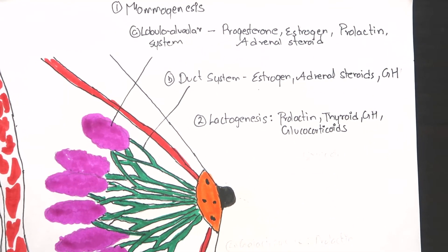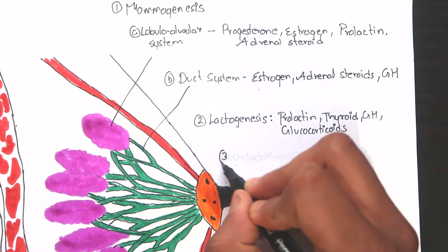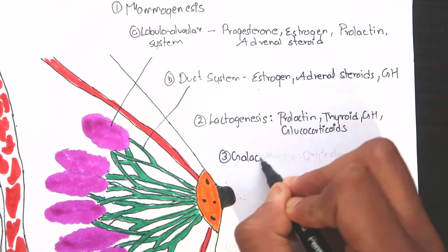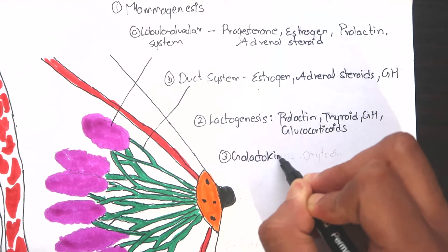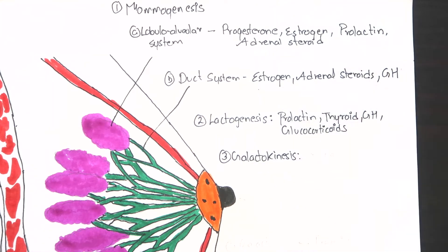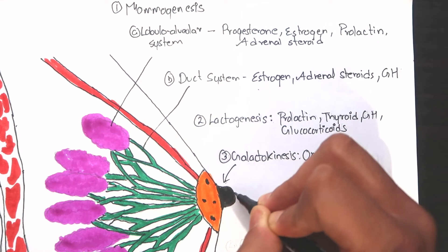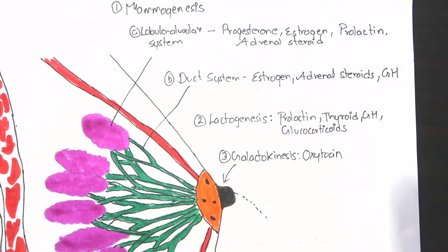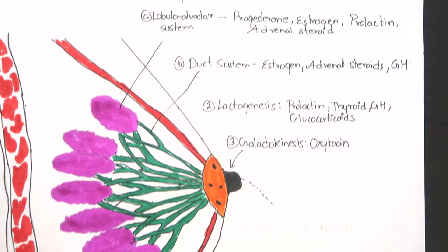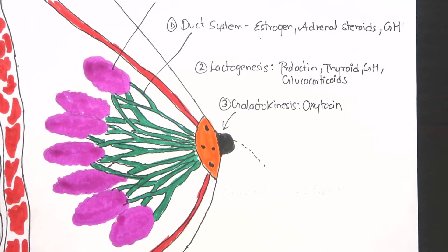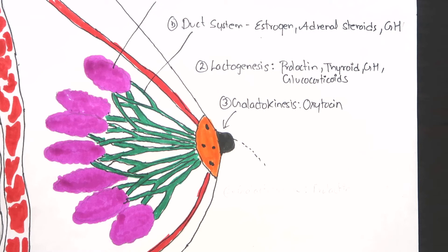After the formation of milk, the next phase is ejection of milk or galactokinesis. During suckling of the nipples by the baby, a conditioned reflex is set up. Hypothalamus produces oxytocin and is released into the blood through posterior pituitary. Oxytocin contracts the myoepithelial cells of the breast and causes ejection of milk.